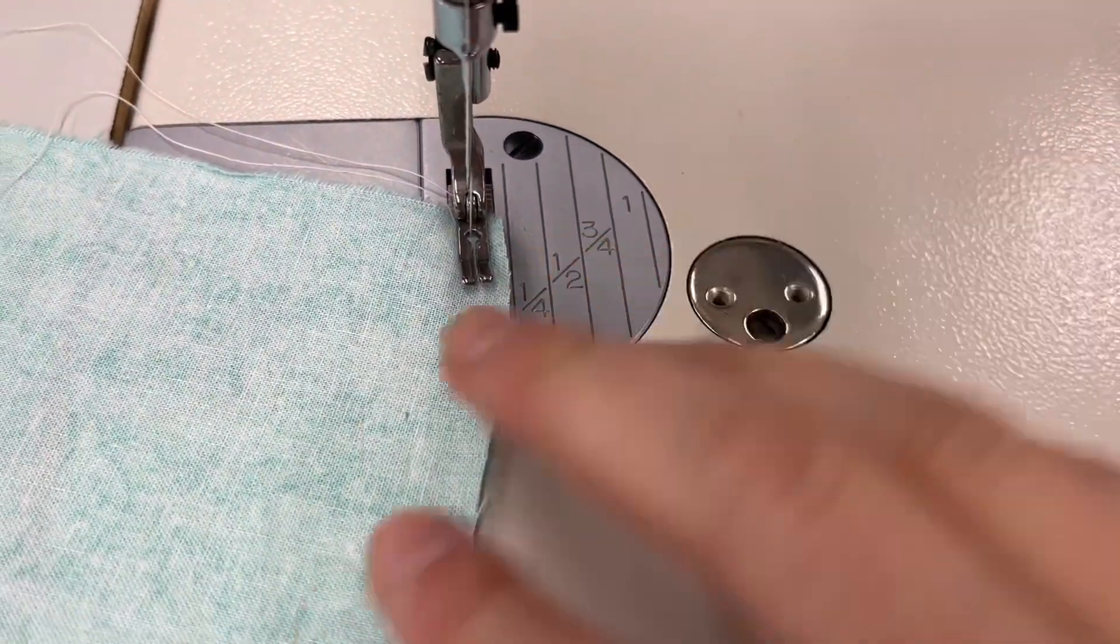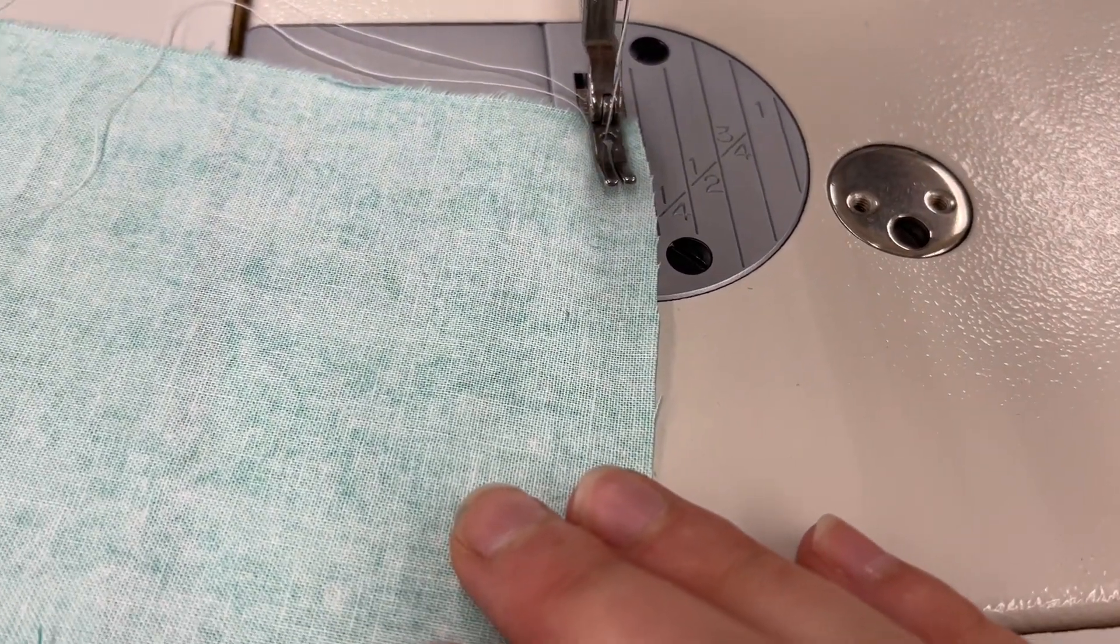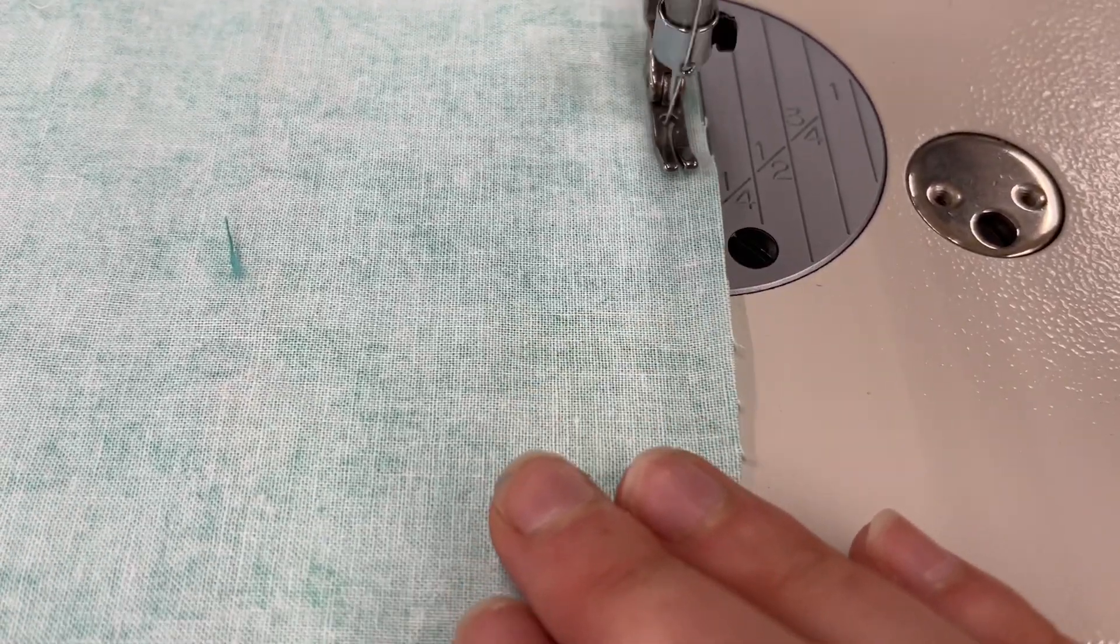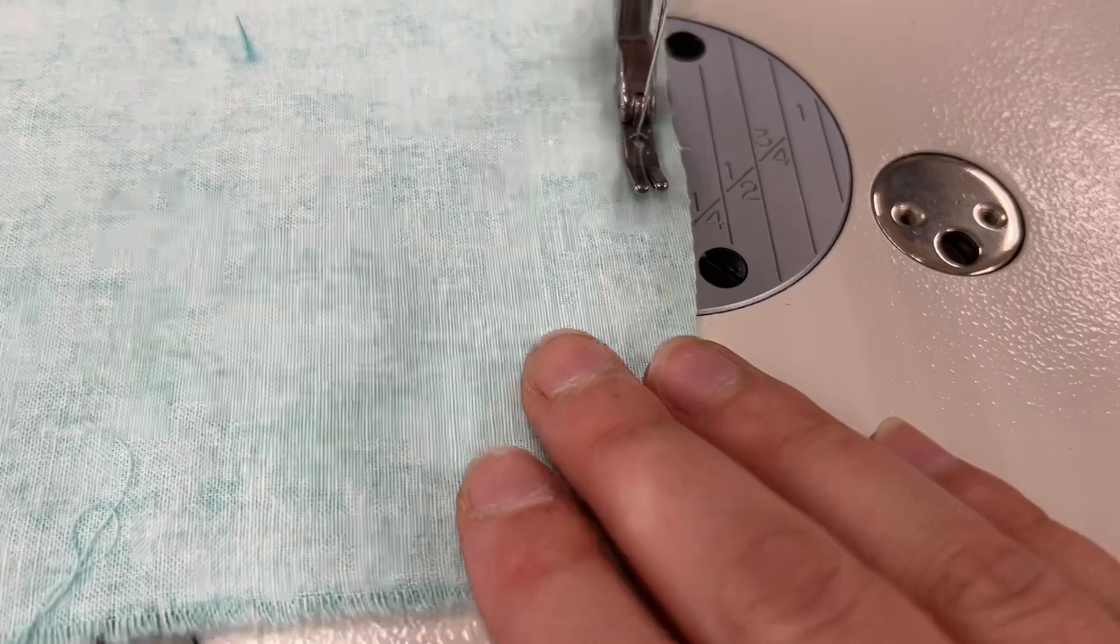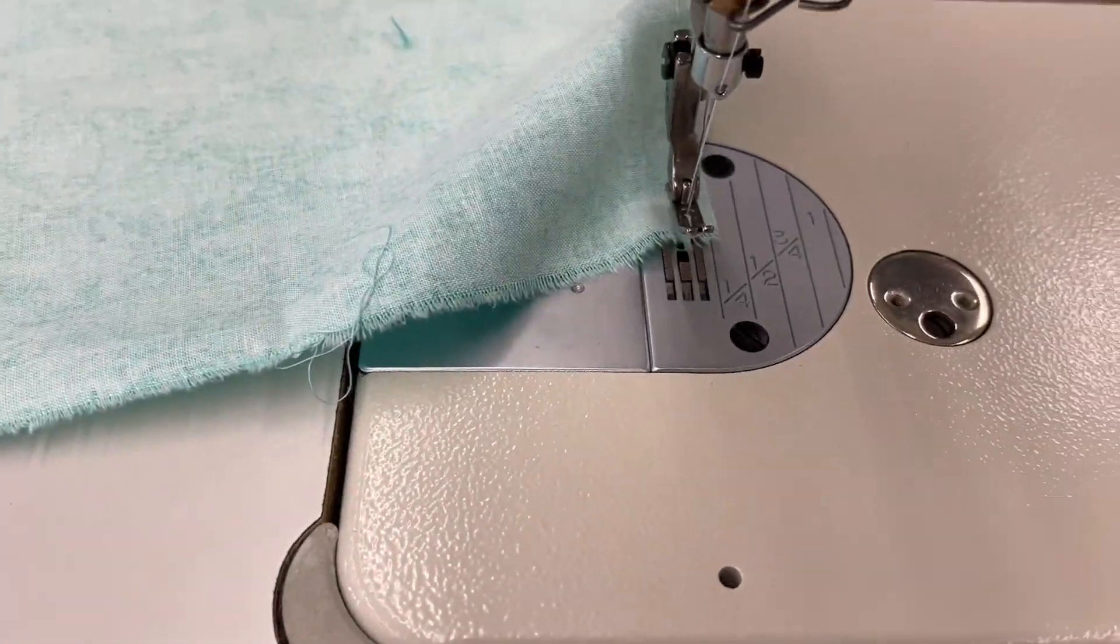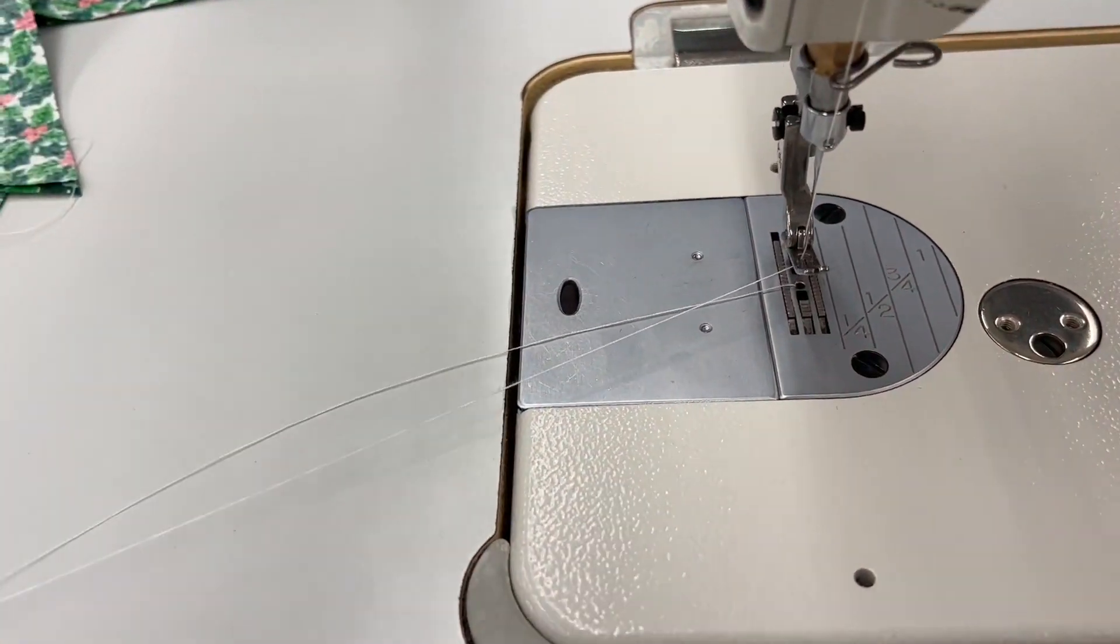At a sewing machine, set your stitch length to 5 for basting stitch and baste a quarter inch away from the raw edge of your fabric. We're going to use this as a gathering stitch so that we can cinch up the distance between point A and point B so that it matches when we turn the hem up.